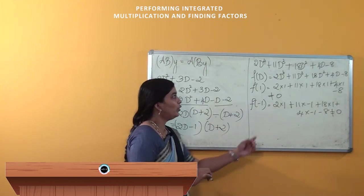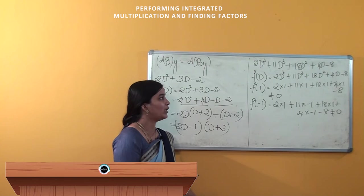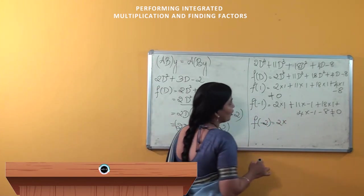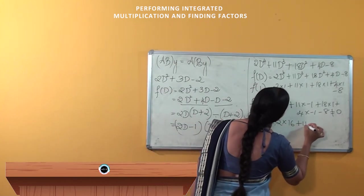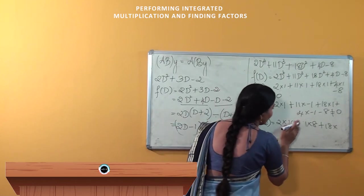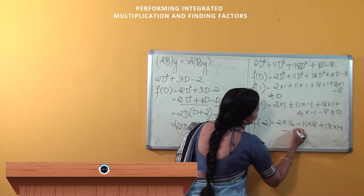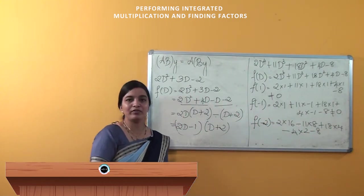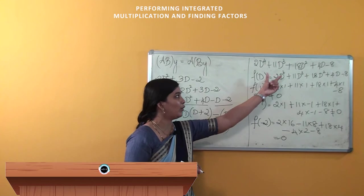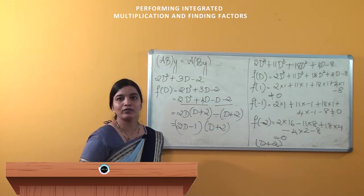What if we substitute D = 2? Since all signs are positive except the last term, substituting +2 will not give zero. Substituting D = −2: we compute 2(16) + 11(−8) + 18(4) + 4(−2) − 8, and on simplification we get the value equal to 0. Therefore, one factor of this 4th degree equation is (D + 2), and (D + 2) is one factor of F(D).